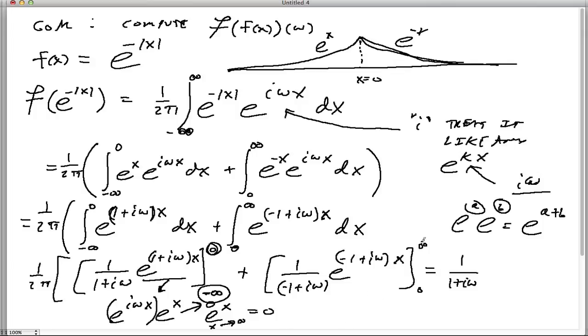Likewise, we look here. The same thing is happening. We see we have an e to the negative x times e to the i omega x. Now, I don't really know what this is doing here at infinity. But what I do see is that as this goes to infinity, that factor goes to 0. So the whole thing goes to 0. So again, we have to evaluate only at the 0 point. So that's going to be a minus 1 over negative 1 plus i omega.